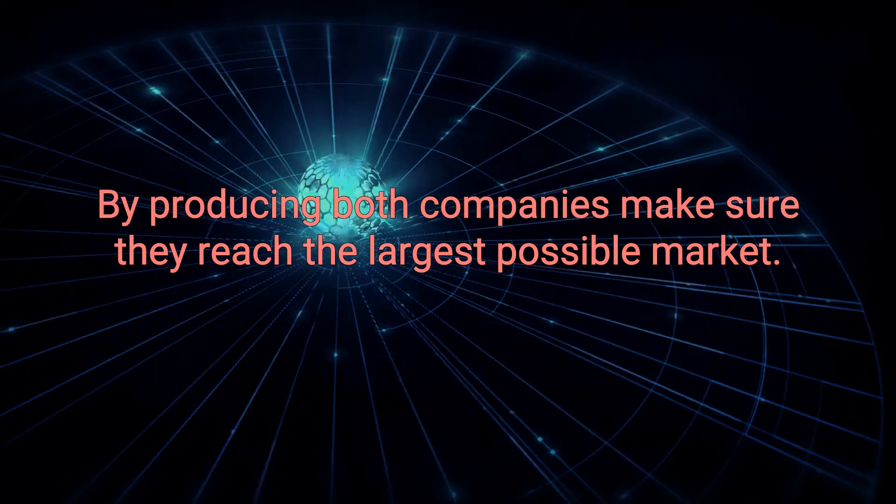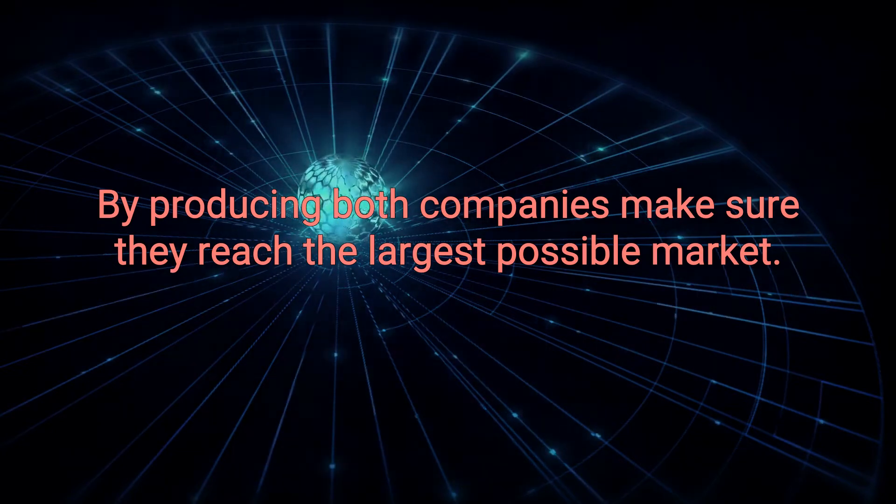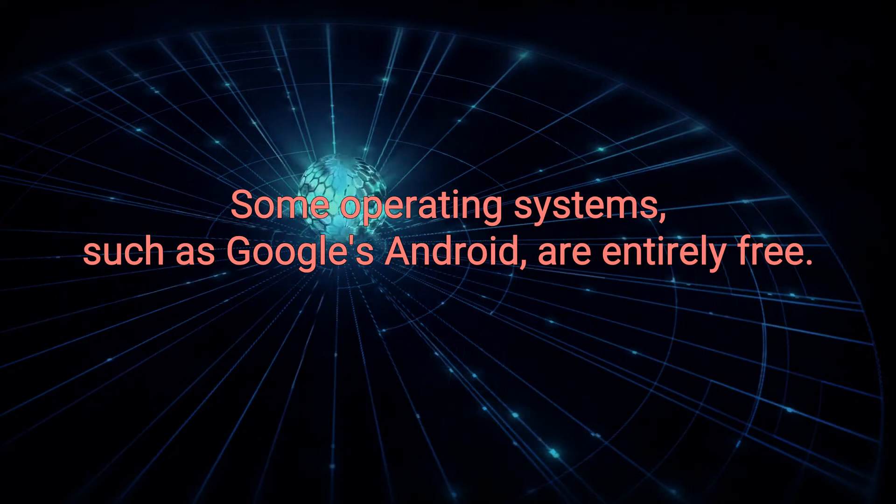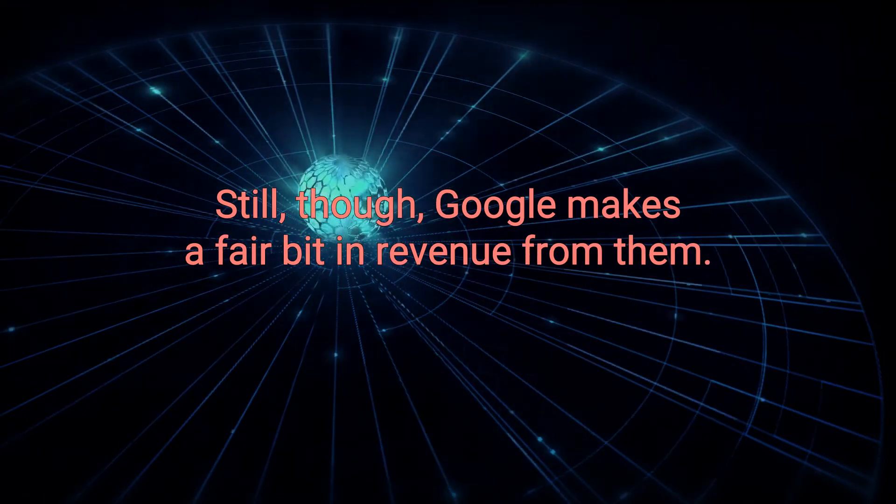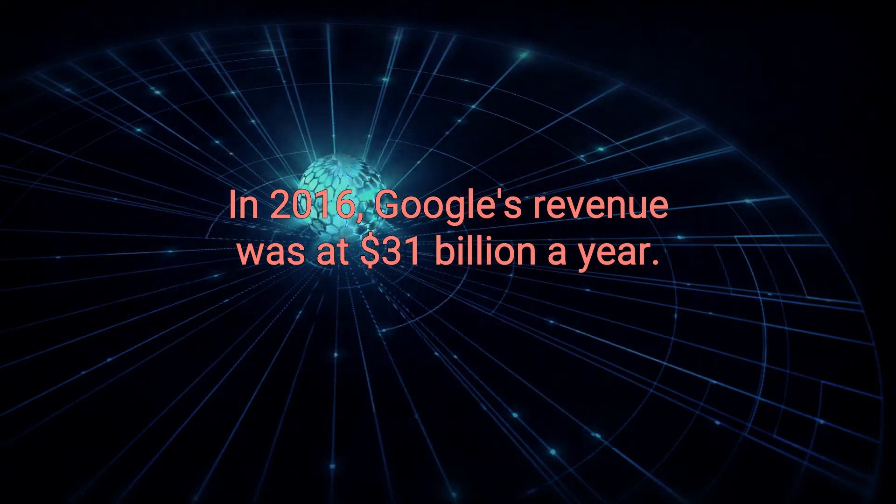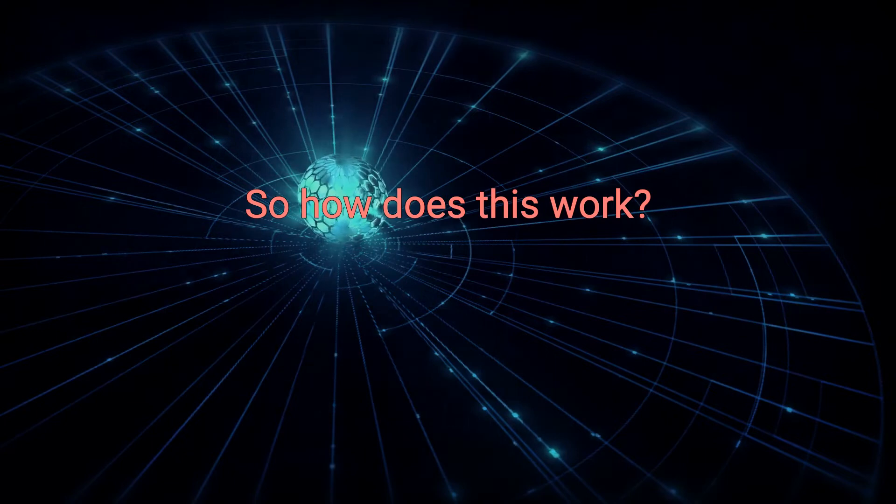By producing both, companies make sure they reach the largest possible market. Some operating systems, such as Google's Android, are entirely free. Still, though, Google makes a fair bid in revenue from them. In 2016, Google's revenue was at $31 billion a year. So how does this work?